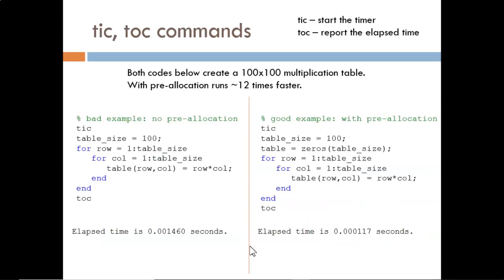This next example illustrates the same principle with hard numbers. First, I need to introduce the tic and toc commands. These are useful for evaluating the efficiency of different coding strategies. Tic begins a timer, toc ends the timer, and displays the elapsed time in the command window.